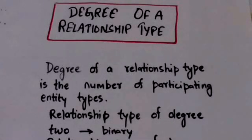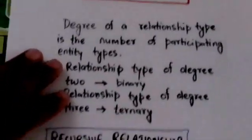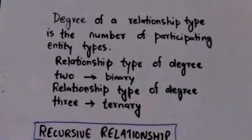Hello friends, welcome back. In this tutorial we will study about degree of a relationship type and recursive relationship. Degree of a relationship type is the number of participating entity types. A relationship type of degree two is called binary. A relationship type of degree three is called ternary.